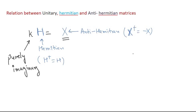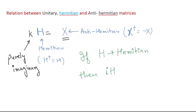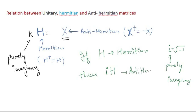So I can write: if H is hermitian, then iH — where i is the imaginary unit, i = √(−1), which is a purely imaginary number — then iH is your anti-hermitian matrix.